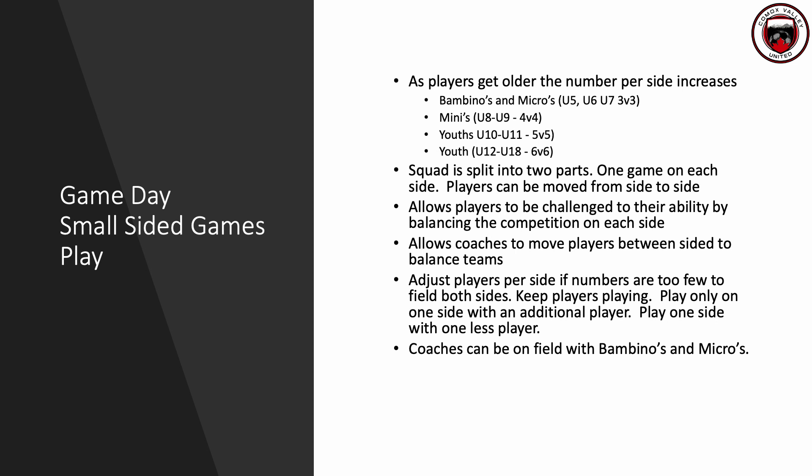On game day, we use side-by-side games or twin games. If you're a team in the youth division playing 5v5 with 12 to 13 players, you'll have both sides going with a 5v5. It allows you to split your squad into two balanced teams, challenge players by balancing competition on each side, and move players between sides. You can also adjust if numbers are down — you can play 4v4 on one side versus 5v5 on the other if needed.